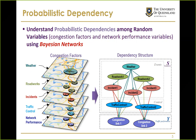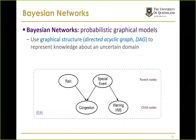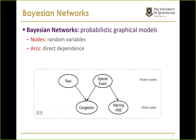The Bayesian network models dependency structure using a graphical model consisting of nodes and edges showing dependency relationships. Formally, a Bayesian network is a probabilistic graphical model that uses a directed acyclic graph to represent knowledge about an uncertain domain. Nodes represent random variables and directed edges represent directed dependencies.